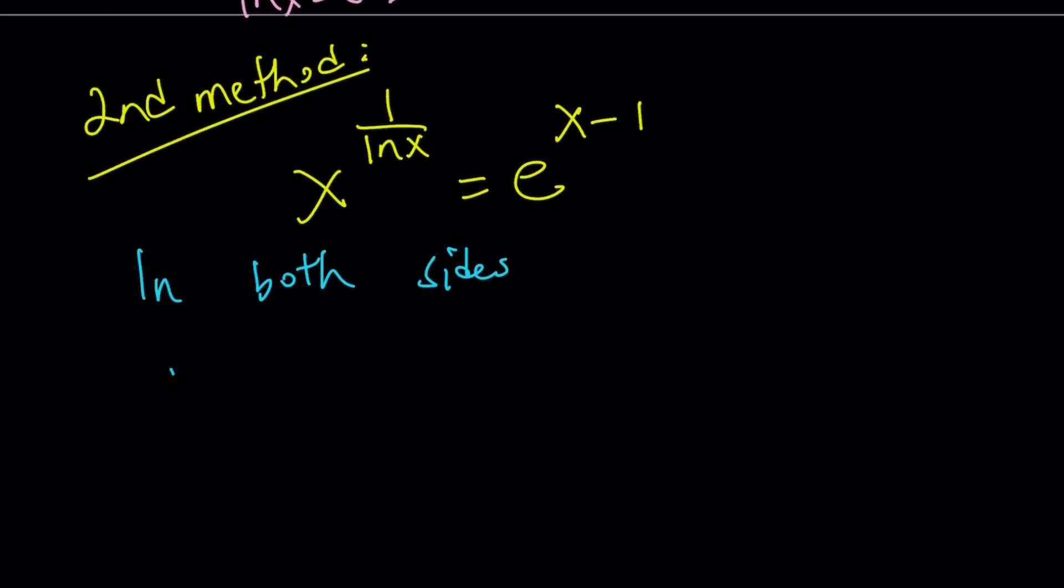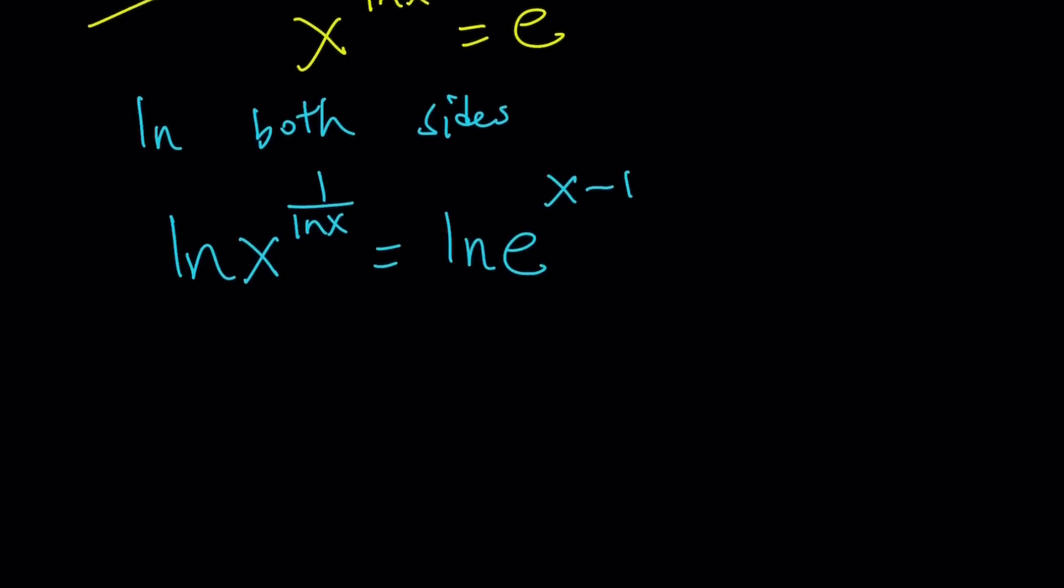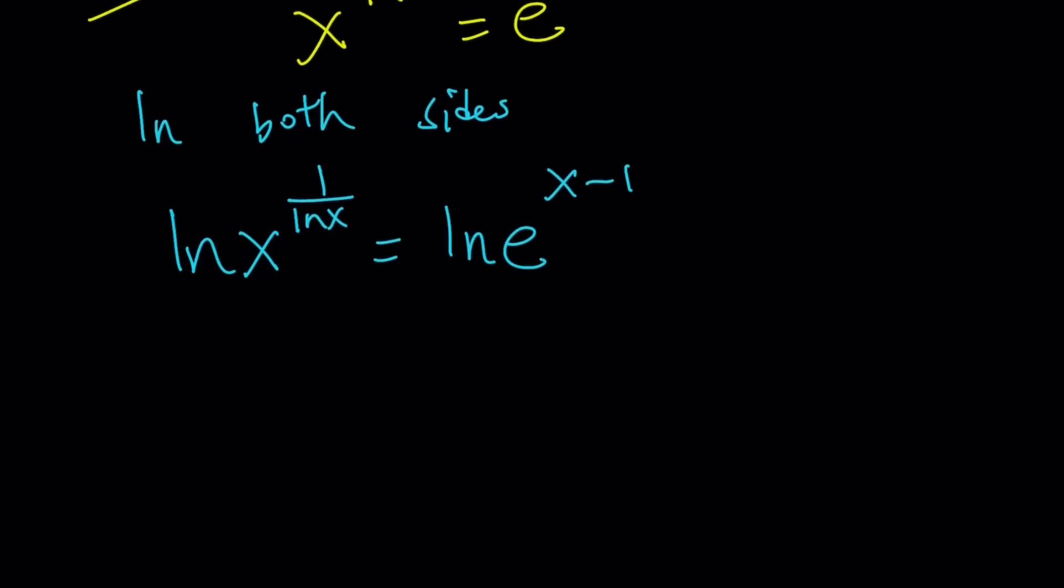If you do get the following, ln x to the power 1 over ln x equals ln e to the power x minus 1. Now, here's a couple of things we need to do. If you have ln b to the power n, then you can write it as n times ln b.